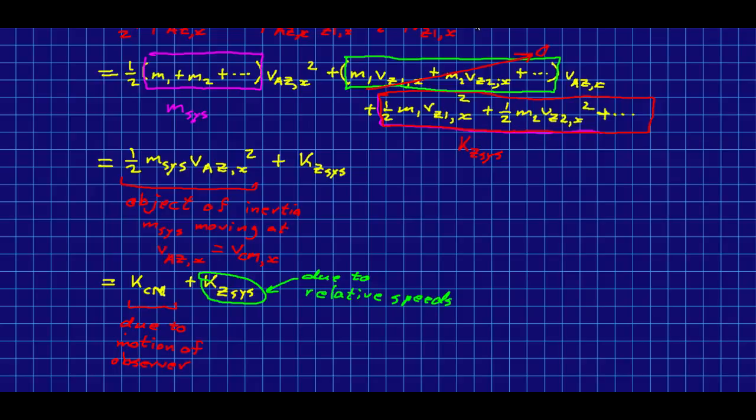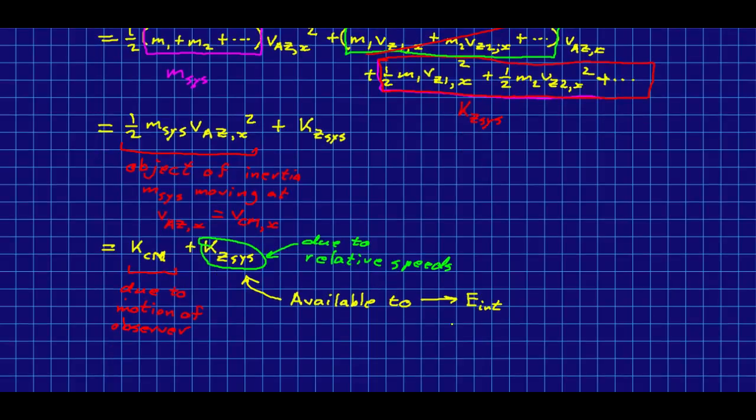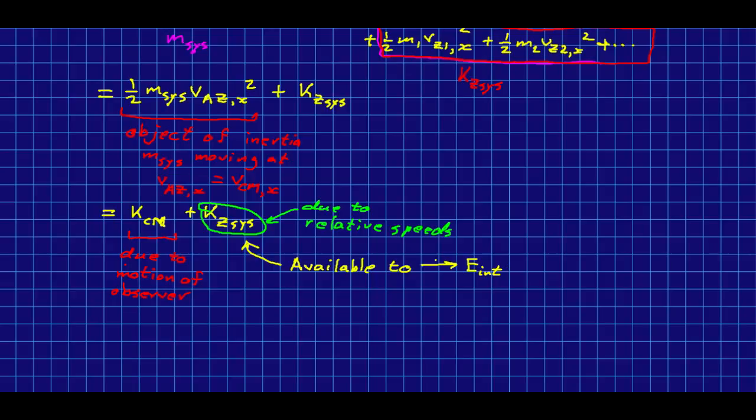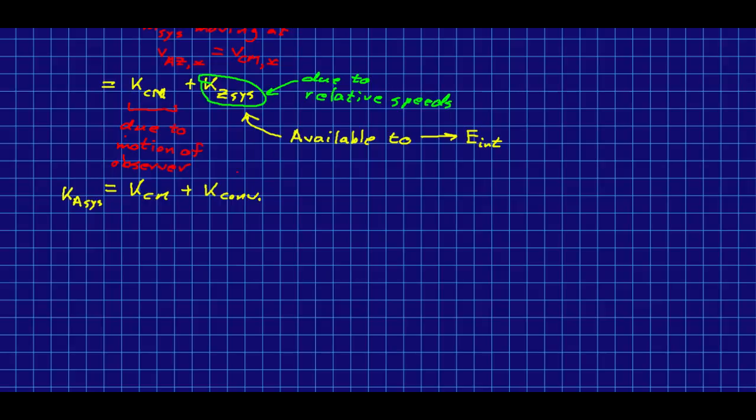Whereas, this piece is really to do with the motion of the observer relative to the system. So, in other words, this piece here is the only part that is available to be converted into internal energy. And so, from the point of view of what the system is able to do within itself, this is the important part. And so, we will call it also, we can call it the z-frame kinetic energy of the system. But, it is also the convertible kinetic energy. Okay, we've essentially got what we wanted. We wanted a transformation that would give us the kinetic energy as measured in the zero-momentum frame. Or, if you prefer, the center of mass frame. And that is what this is.